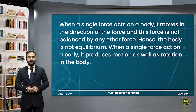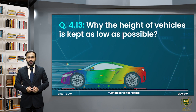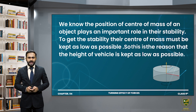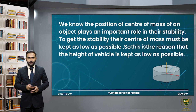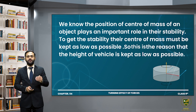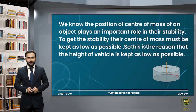Question 4.13: Why is the height of a vehicle kept as low as possible? The position of the center of mass plays an important role in stability. To get stability, the center of mass must be kept as low as possible — the lower the center of mass height, the more stable the body. That is why the height of a vehicle is kept as low as possible.